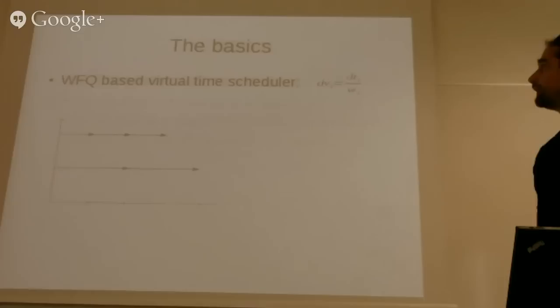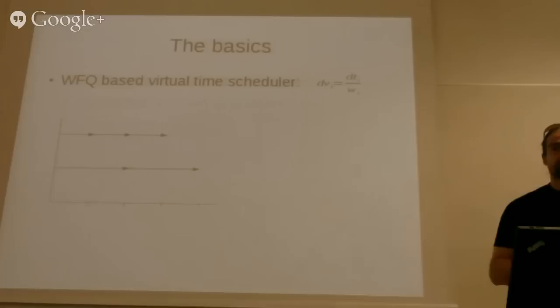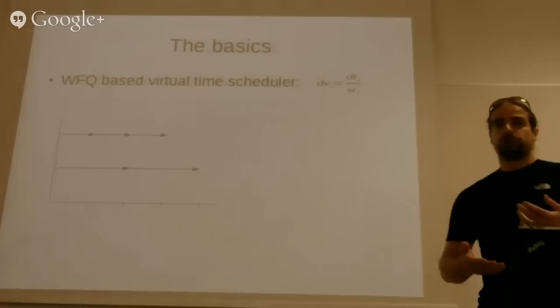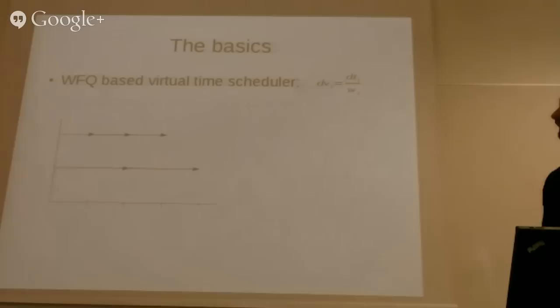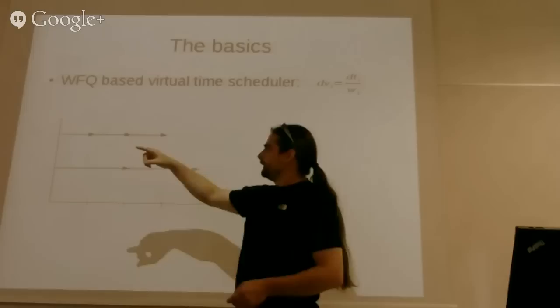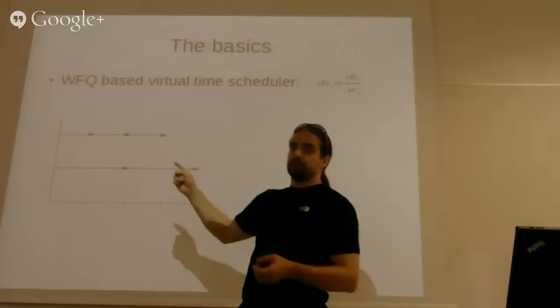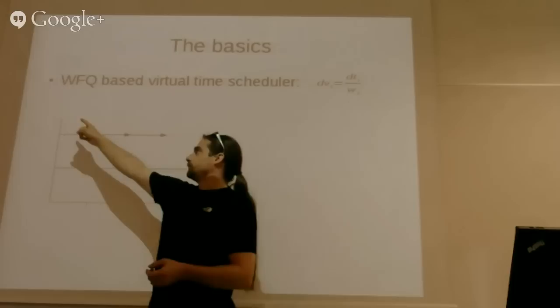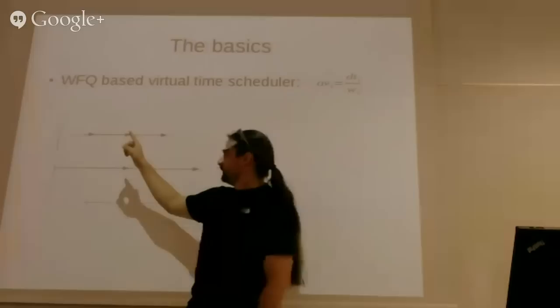So the basis for the whole idea is the weighted fair queueing scheduling paradigm. It's implemented as a virtual runtime scheduler. So the increase in your virtual runtime is the actual time divided by the weight. If the weight is one, which is nice zero, it's all the same. We've got here two tasks, one with a higher weight that will be a lower nice value. Each arrow represents, say, one millisecond of runtime. And you see this task has double the weight. If this is one, then this would be a weight two. And it gets to run twice for this one. It's very simple.